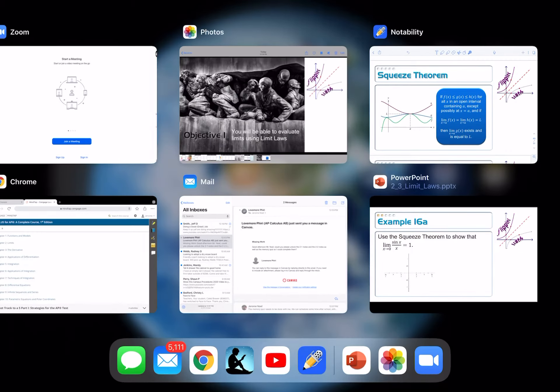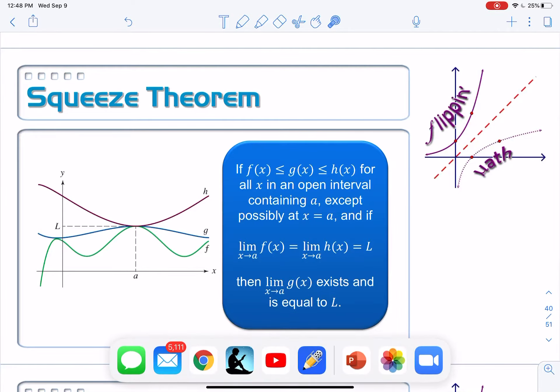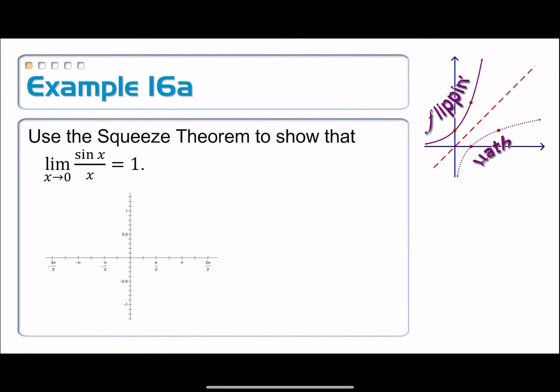So I have to establish these two things first in order to be able to conclude that the limit exists and is equal to 1 also by the squeeze theorem. Okay, so let's graph sine x over x. That's our starting place here.